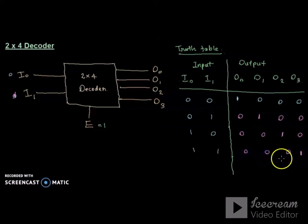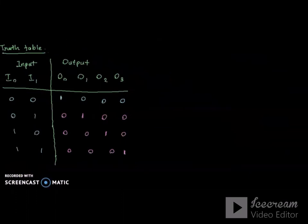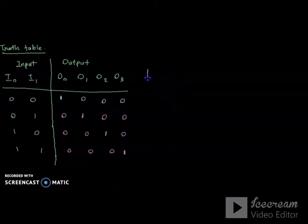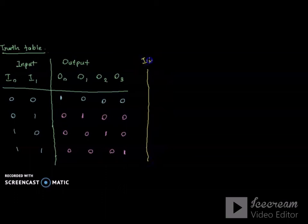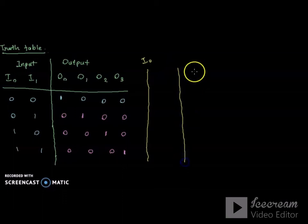Now we will implement this circuit. We will draw lines i0 and i1. i0 is drawn, and i1 is drawn alongside it.